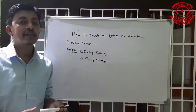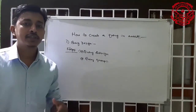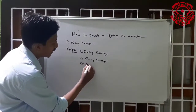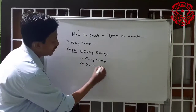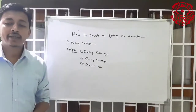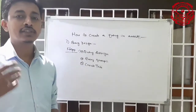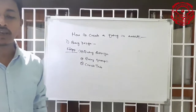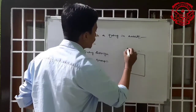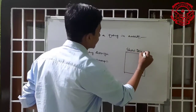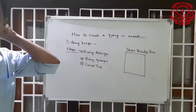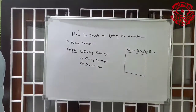Creating a query is not an easy task — it will take time, but the steps are so important. After that you click the create tab button, which is on the top of the query group. In the queries group you can see a create tab — just click the create tab. After that the show table dialog box appears.